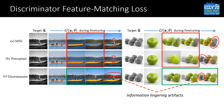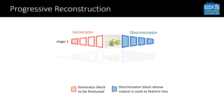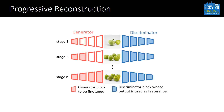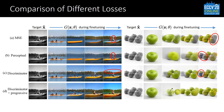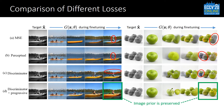This is because the deep layers of the generator start to match low-level textures before high-level configurations are aligned. To address this issue, we propose a progressive reconstruction strategy, which is to fine-tune the generator gradually from shallow layers to deep layers. This allows the reconstruction to start with matching high-level configurations, and then gradually shift its focus to low-level details. With the progressive reconstruction, the artifacts are removed and the restoration results are more realistic, showing that the image prior is better preserved.